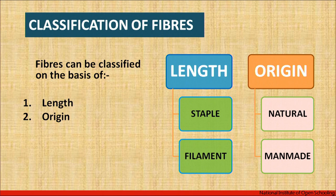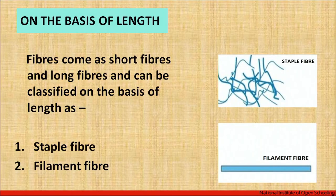Next is the classification of fibers. Fibers are broadly classified under two categories: one is on the basis of their length and the other is on the basis of origin. Fibers come as short fibers — usually natural fibers come as short fibers — and long fibers are made through chemical treatments, or we can say man-made fibers are usually filament in nature. So here we are going to understand two terminologies: staple fiber and filament fiber.